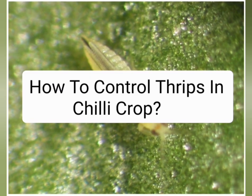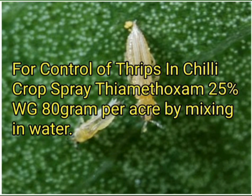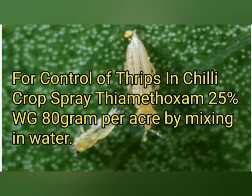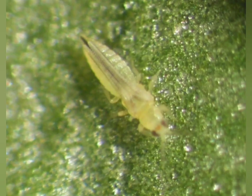How to control thrips in chili crop? For control of thrips in chili crop, spray thiamethoxam 25% WDG at 80 gm per acre by mixing in water.